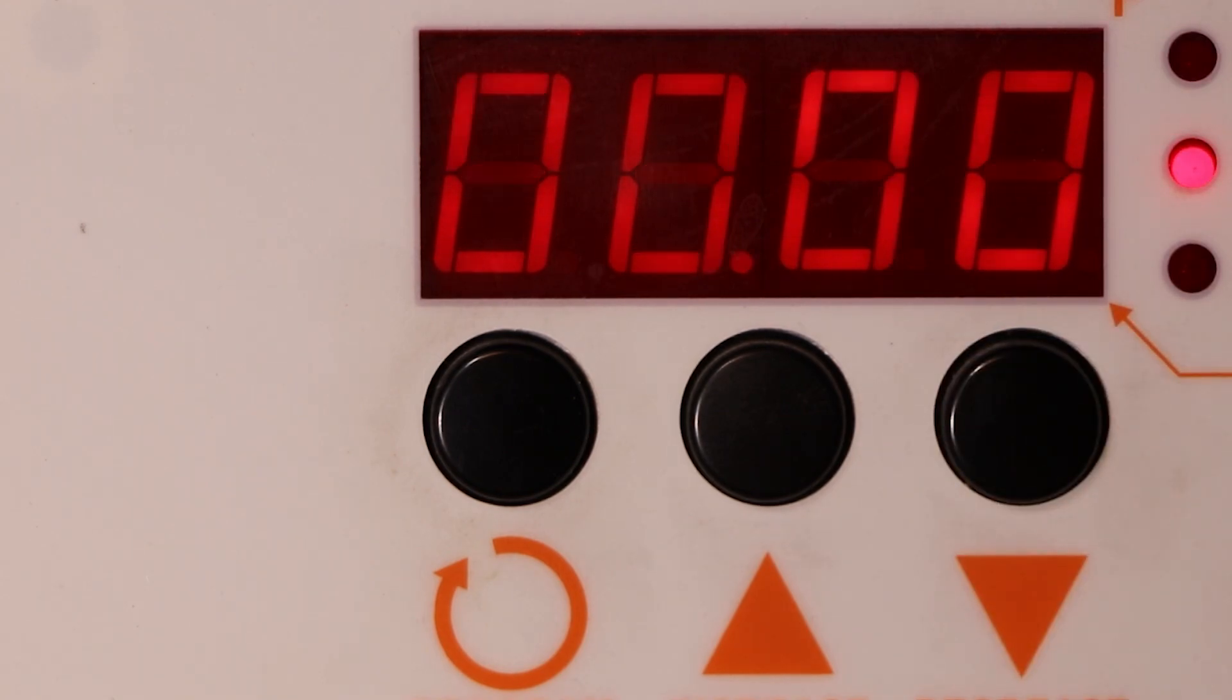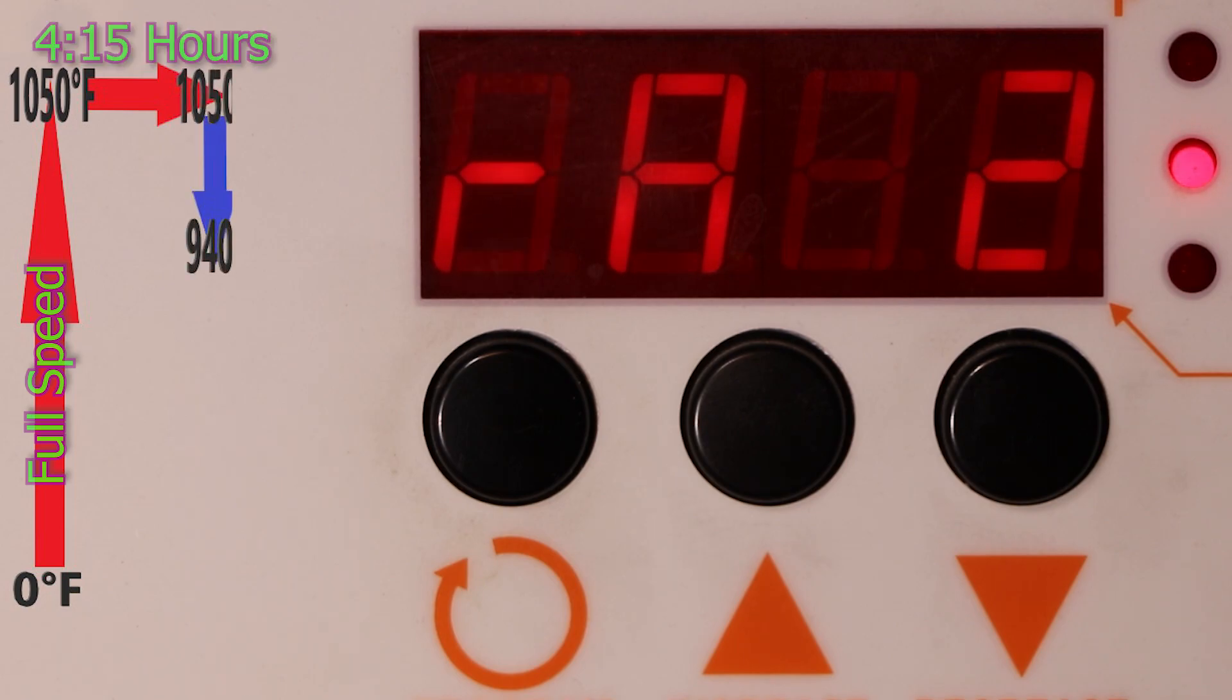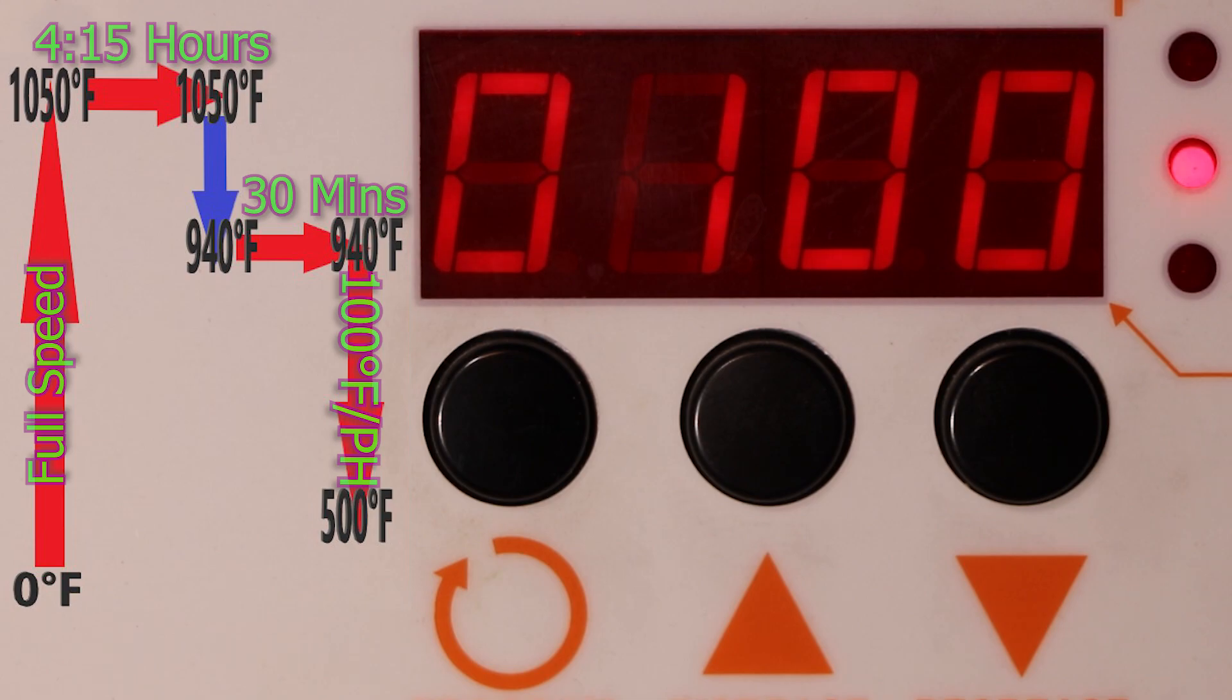And so let's review this program called Bede4. The delay is set to zero, which means it begins without any delay. Ramp temperature is set to full speed. The Fahrenheit target temperature is 1050. It will hold this target temperature for 4 hours and 15 minutes, before ramping down at full speed to the second Fahrenheit temperature of 940. It will hold this temperature for 30 minutes, before ramping down at a rate of 100 degrees per hour, until it reaches 500 degrees, which then it'll shut off.